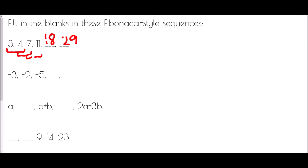In our next sequence we're starting with negative numbers: negative 3 and negative 2. Negative 3 plus negative 2 is negative 5. Next, negative 2 plus negative 5 is negative 7. And finally, negative 5 plus negative 7 is negative 12.